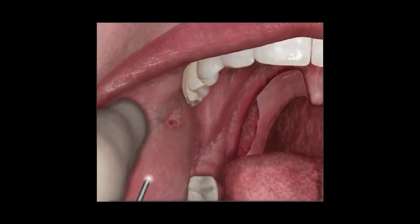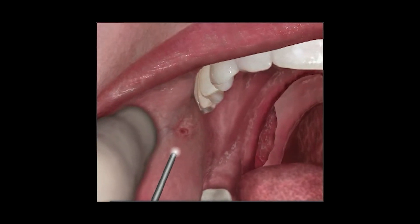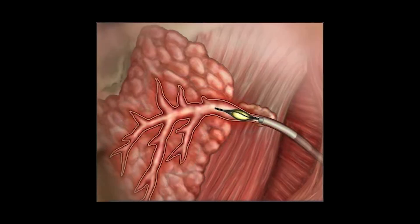In that case, we use something called sialendoscopy. A small camera is inserted into the duct. We find the actual stone, grab it with a basket, and pull it back out of the natural opening, thus relieving the obstruction and removing the stone at the same time.